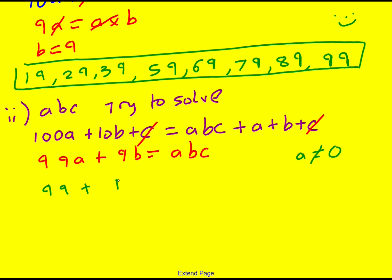99 plus 9B over A is going to equal BC. Okay, this is still okay. Thing is that BC is necessarily going to be less than or equal to 81 since B is less than or equal to 9 and C is less than or equal to 9.